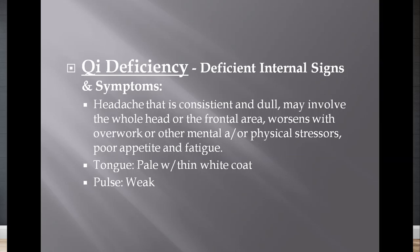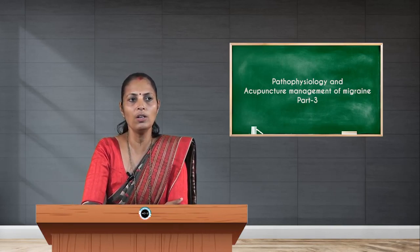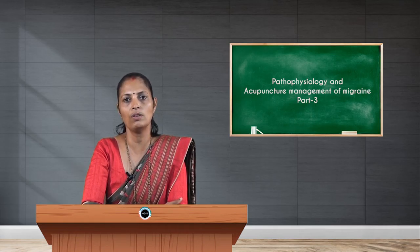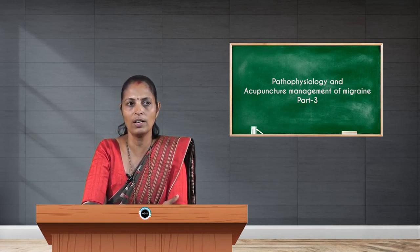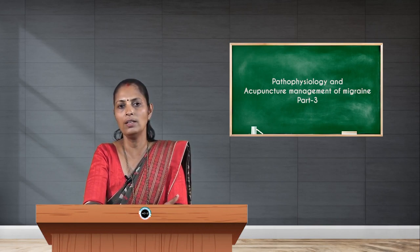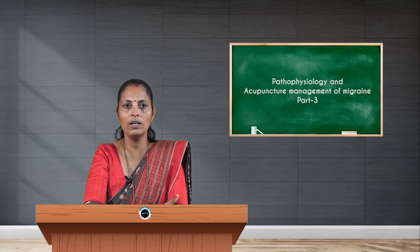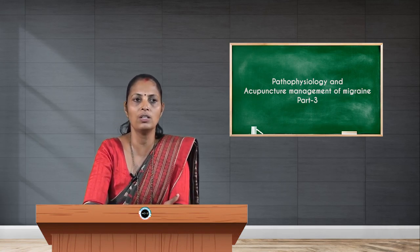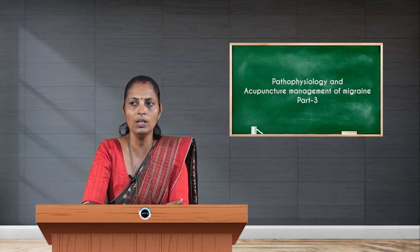The tongue may be pale with a thin white coat; pulse may be felt as weak. Treatment options: Spleen 6 tonifies the stomach and spleen; Stomach 36 tonifies stomach and spleen; CV 6, located one cun below the center of the umbilicus, helps to tonify the chi; GV 20 raises the chi to the head region; UB 20 activates the spleen to nourish the liver and support brain functions.